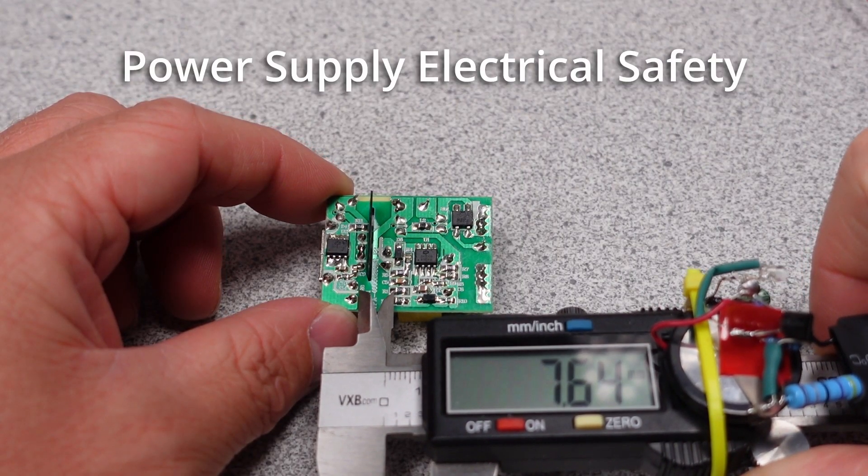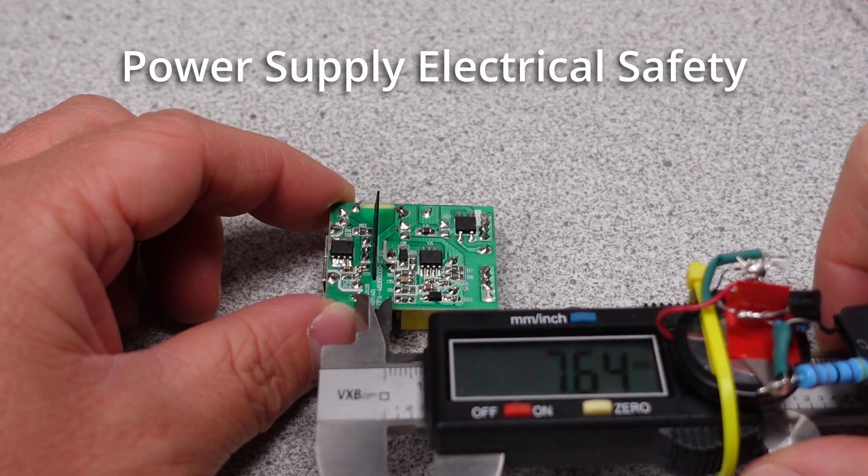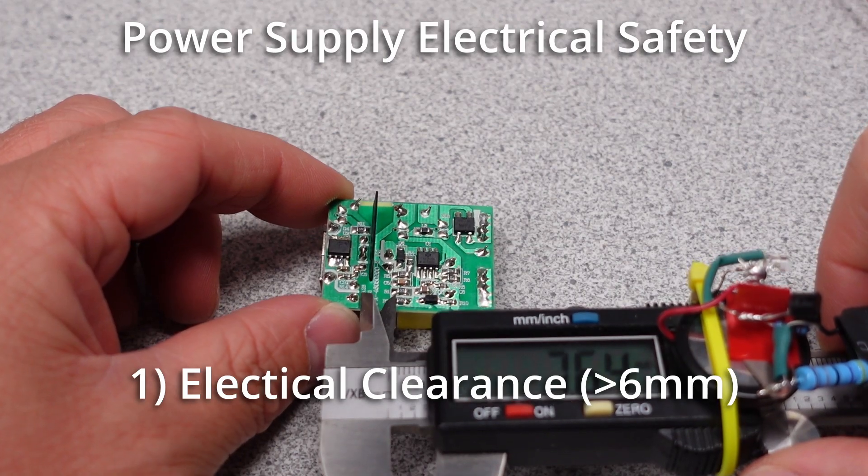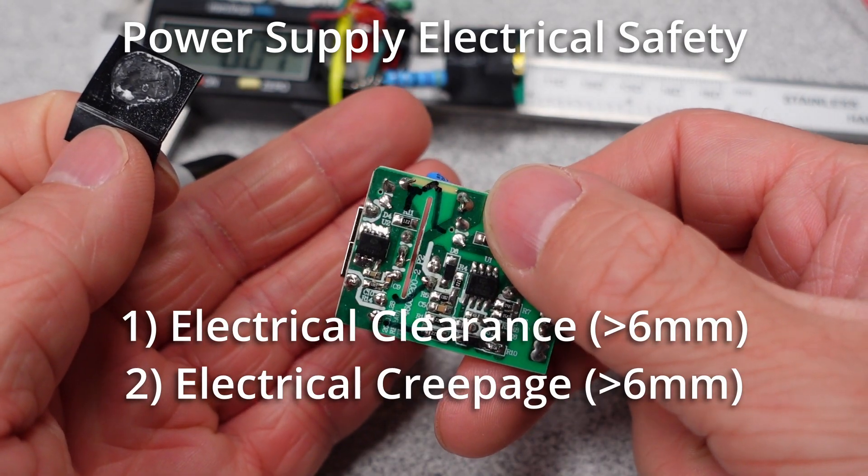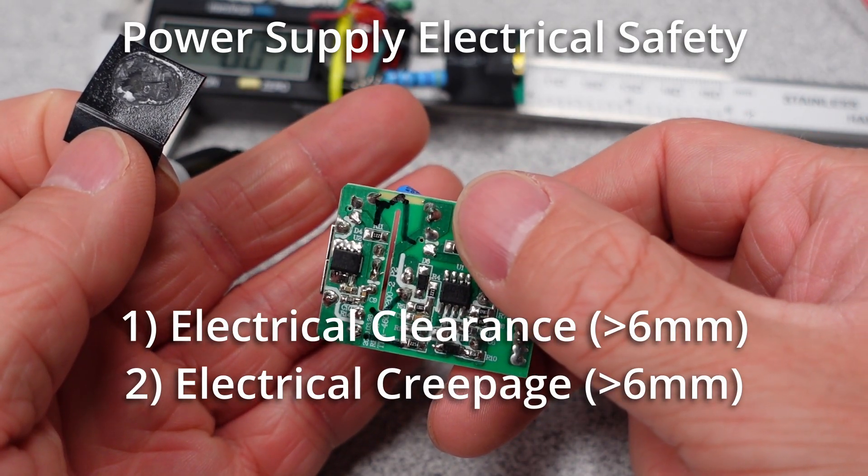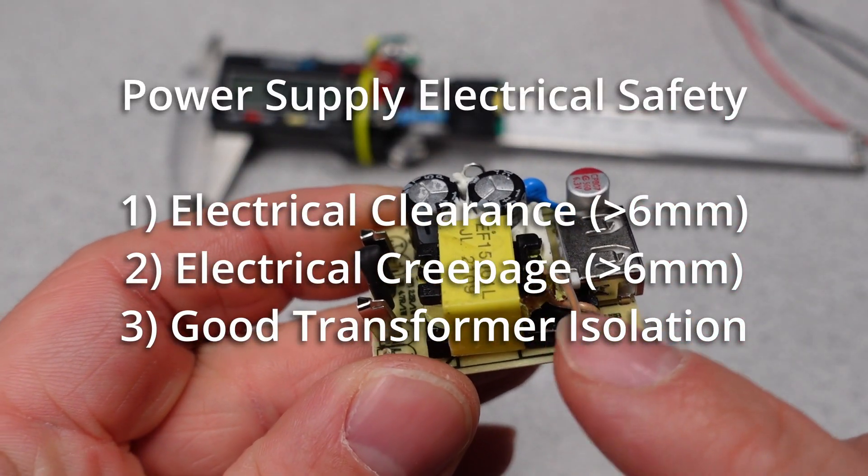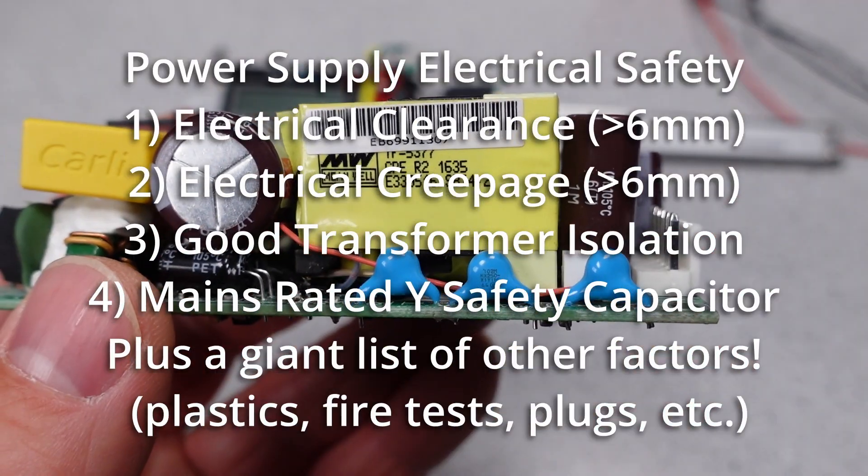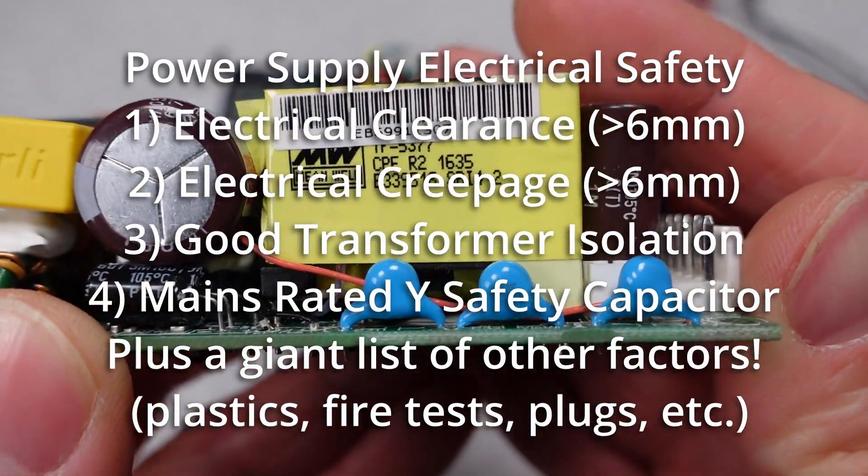So, to summarize, the safety of power electronics devices depend on four basic design criteria. Maintain proper clearance between components on the circuit board. Properly separate and isolate high voltage traces from low voltage traces, aka creepage. Ensure proper isolation of the transformer. And use a properly rated Y safety capacitor between primary and secondary sides of the circuit.